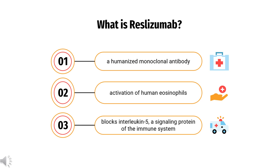Reslizumab binds specifically to IL-5, a key cytokine responsible for the differentiation, maturation, recruitment, and activation of human eosinophils.